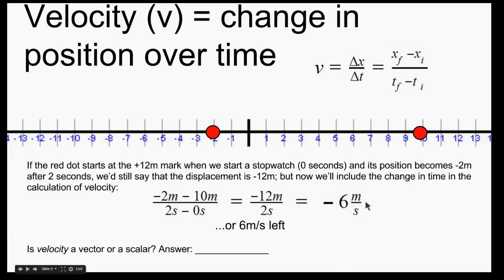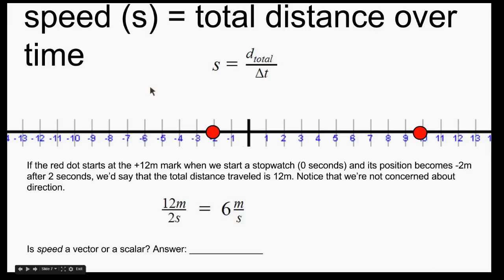The units for velocity are meters per second. In this example, the velocity was negative 6 meters per second, or 6 meters per second to the left. Velocity is a vector because direction is important — we have to say 'to the left' or include the negative sign, which means to the left. Speed is the total distance over the time. In a similar situation, starting at 10 meters and ending at the negative 2 meter mark, the distance is 12 meters — no negative sign, direction doesn't matter — divided by 2 seconds gives us 6 meters per second with no direction. So speed is a scalar.